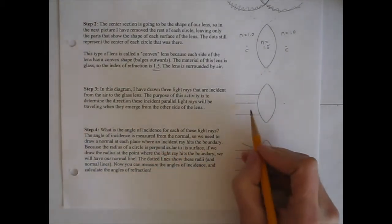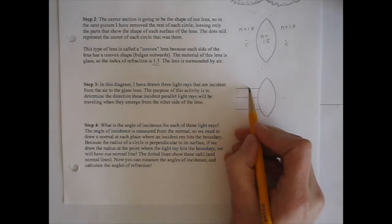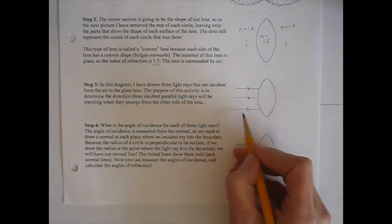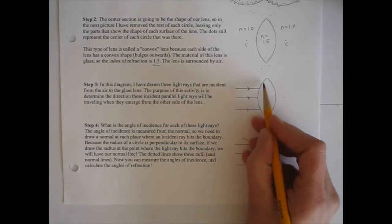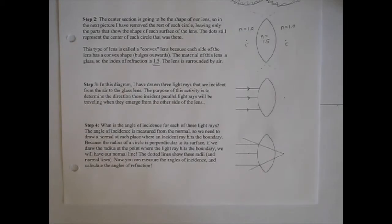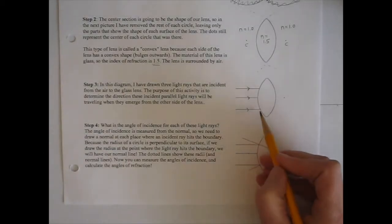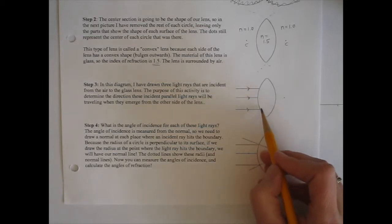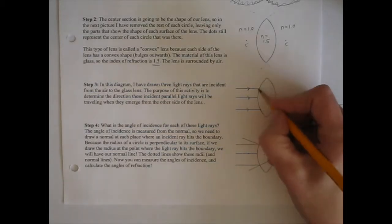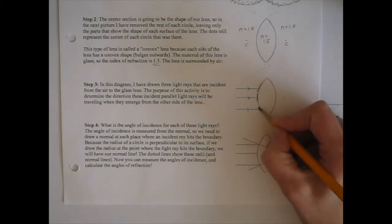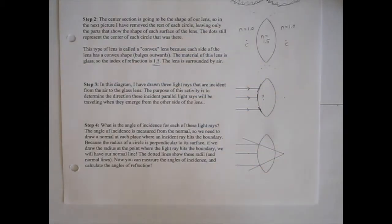In the third diagram, I have drawn three light rays that are incident in the air and going to strike the lens on its edge. The purpose of the activity on the next sheet is to draw, using Snell's Law, what directions each light ray is going to continue at this boundary between air and glass, and at the two other boundaries as well.